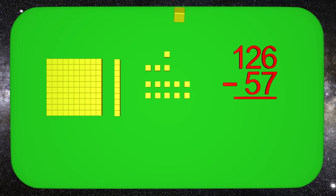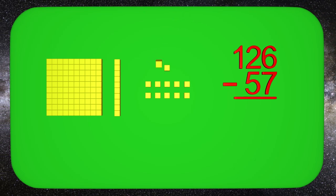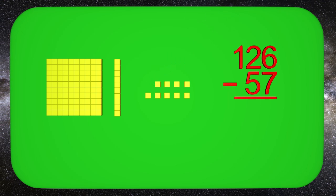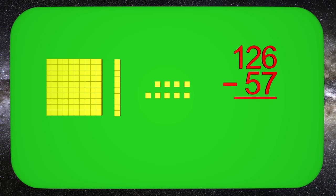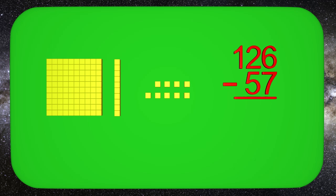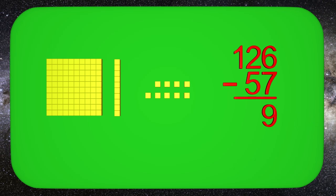Now I have enough ones blocks to take away the 7. So we take away 1, 2, 3, 4, 5, 6, 7. How many ones blocks do I have left? 9! I am left with 9 ones.